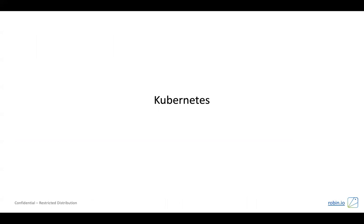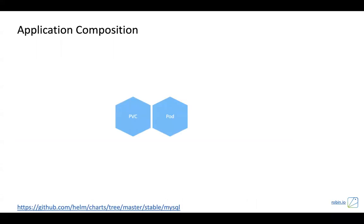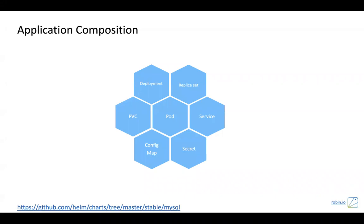Moving on to the second phase: Kubernetes. Kubernetes is a very opinionated framework. Traditionally, applications have storage, network, and compute components. But in a Kubernetes ecosystem, there are many more components that make up a fully functioning MySQL application: PVC, pod, deployment, replica set to manage upgrade cycles, service to expose the application, config map and secret to store configuration and passwords. You have to follow these rules to really bring an application into the Kubernetes ecosystem.